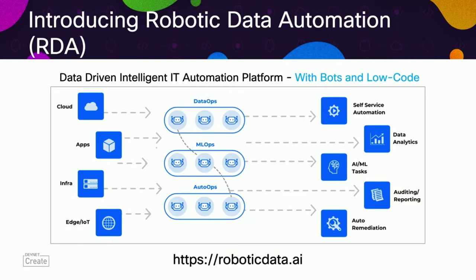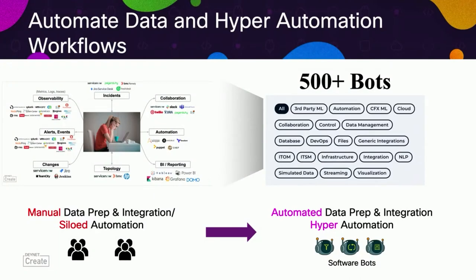So what is RDA? It is a data-driven and intelligent IT automation platform based on bots and a low-code approach. With RDA, you can take data from any of these environments, apply bots and pipelines, and do completely automated, data-driven IT workflows. In a traditional approach, you may be doing a lot of manual data prep and integration, or using siloed automation tools. With RDA, we have built a library of more than 500 bots that help you do automated data preparation and enable hyper-automation across all your IT environments using intelligent data bots.